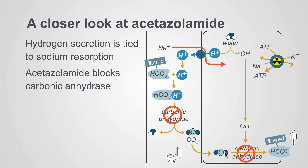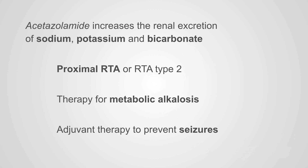Acetazolamide blocks the two roles of carbonic anhydrase, which essentially shuts down the entire pathway, blocking sodium reabsorption — hence the diuretic effect. In net, acetazolamide increases the renal excretion of sodium, potassium, and bicarbonate. That increased renal excretion of bicarbonate results in a proximal RTA, or renal tubular acidosis type 2.